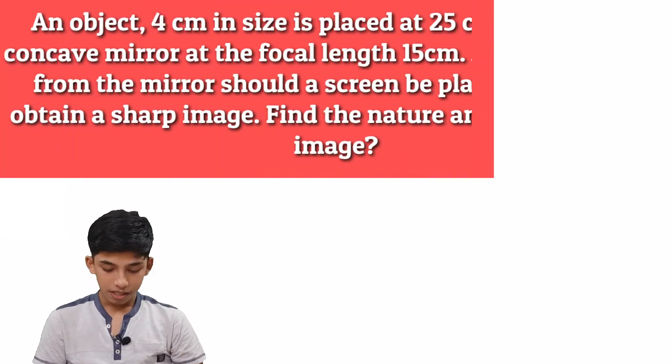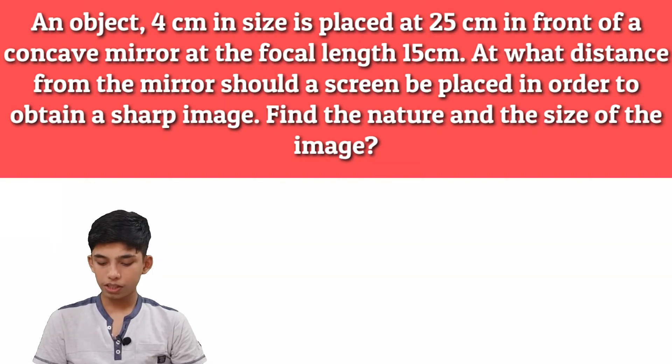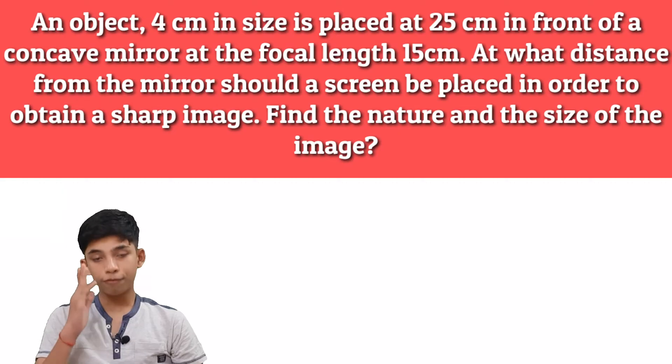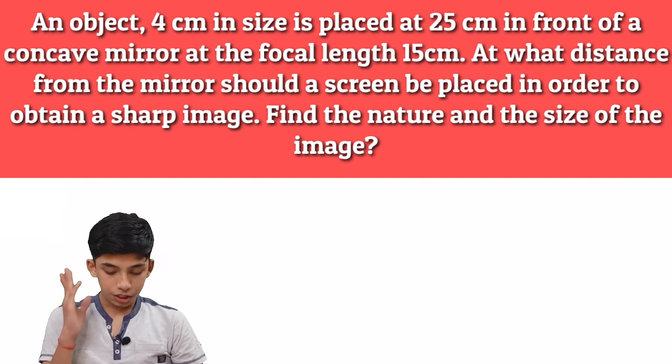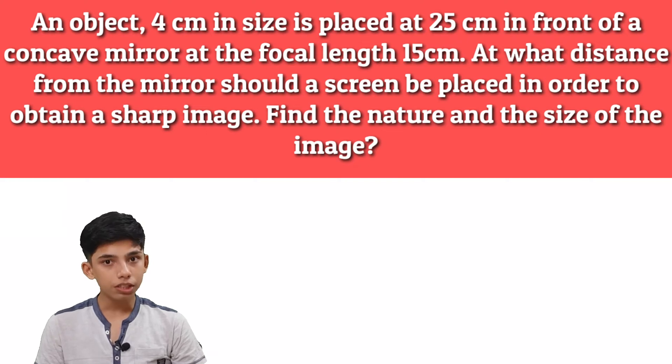Our question says that an object 4 cm in size is placed at 25 cm in front of a concave mirror. Now the focal length is 15 cm. At what distance from the mirror should a screen be placed in order to obtain a sharp image?